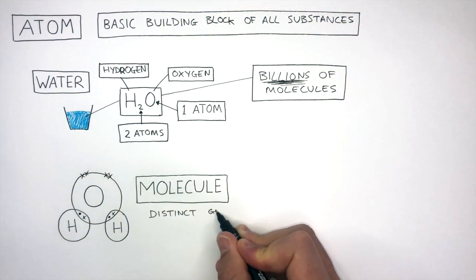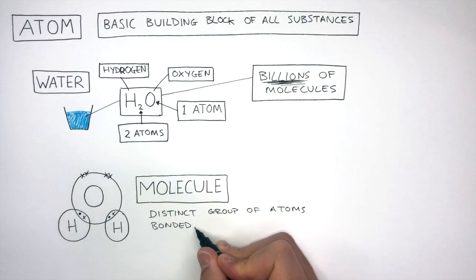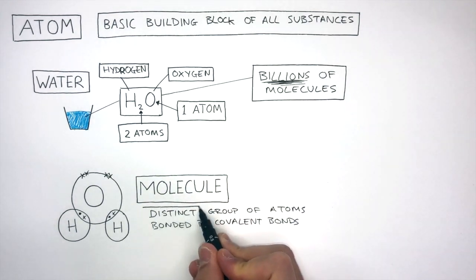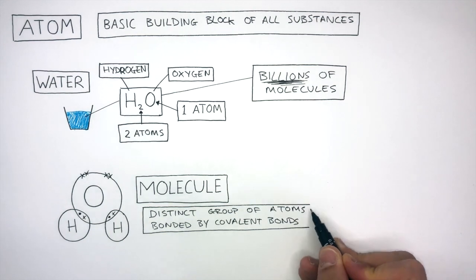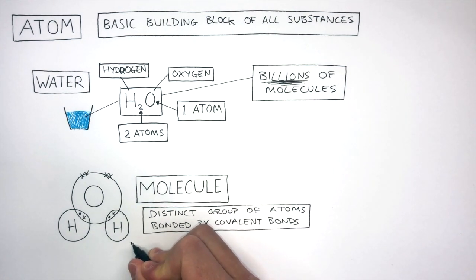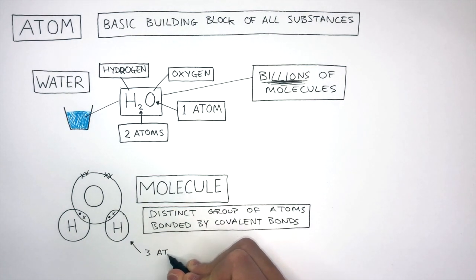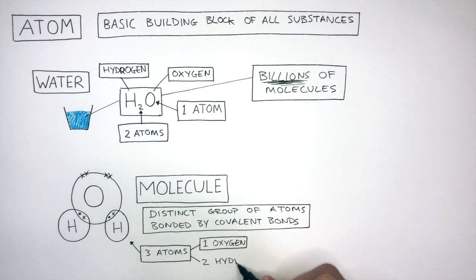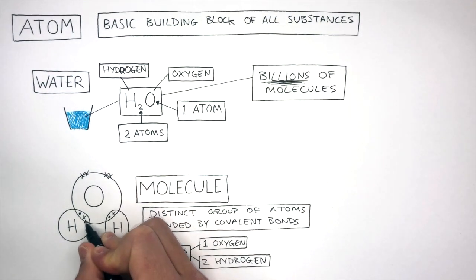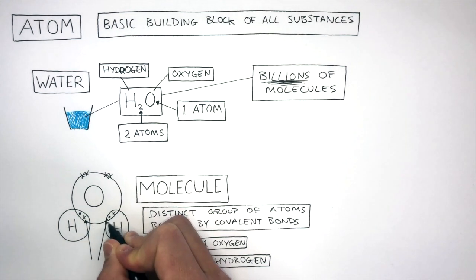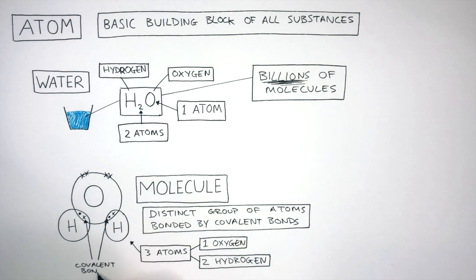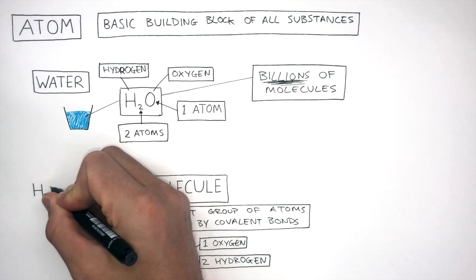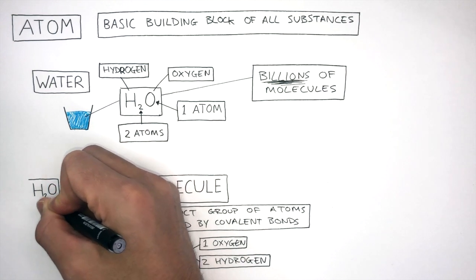A molecule is a distinct group of atoms bonded by covalent bonds. A group is where there are two or more, so there are three atoms: one oxygen atom and two hydrogen atoms. You can very clearly see these atoms are bonded by covalent bonds. A covalent bond is the shared pair of electrons between non-metal atoms. H2O is the molecular formula of water.